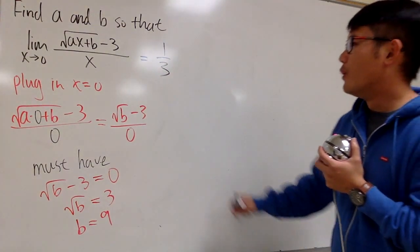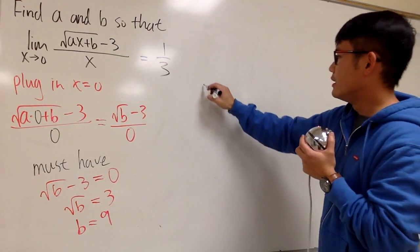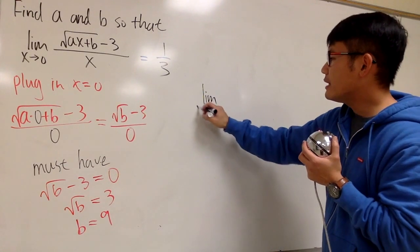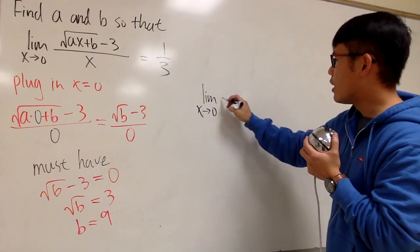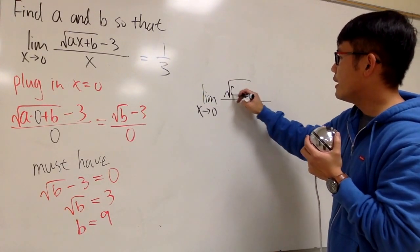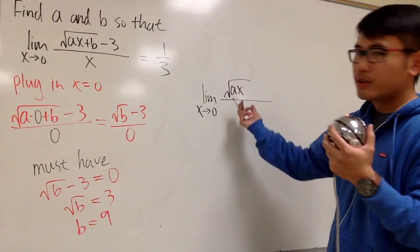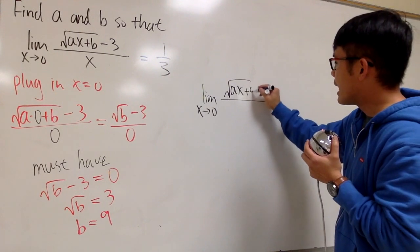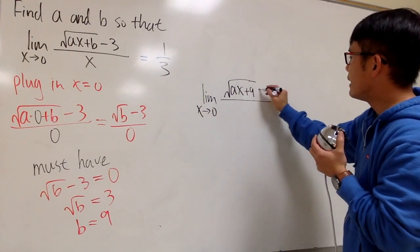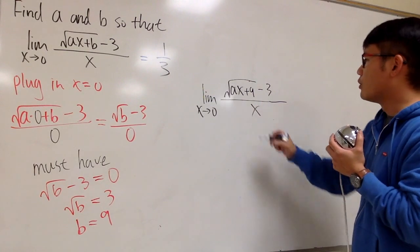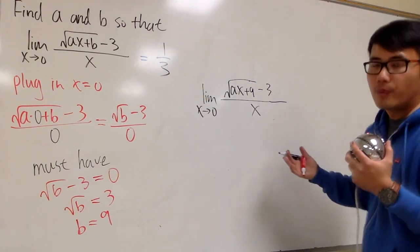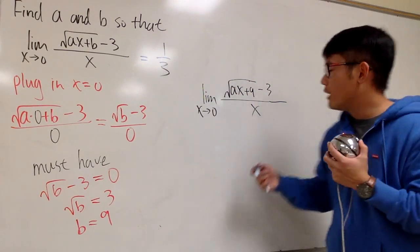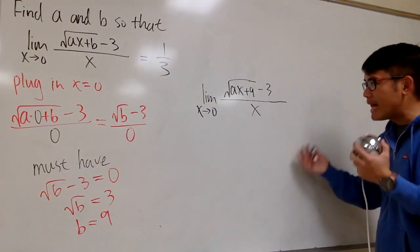And now what? Well, now, let's see, this time, the limit as x approaching 0, square root of ax, a I still don't know, so I'll put ax, b is 9, so I'll put plus 9, and then minus 3, all over x. Well, let's do a typical thing now. I know this is going to be 1 third, but now, how about let's multiply the top and bottom by the conjugate, because that's the usual strategy.